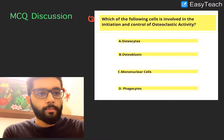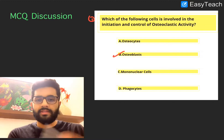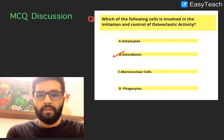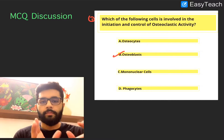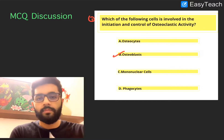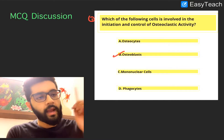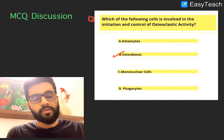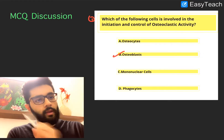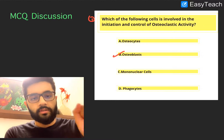The answer here is B, osteoblasts. Although this seems like a very fact-based and straightforward question, it has a deep concept hidden in it, which we'll discuss. That concept is asked throughout exams and repeated again and again. Understanding that concept is vital, and this can be asked in an application-based way in many ways.